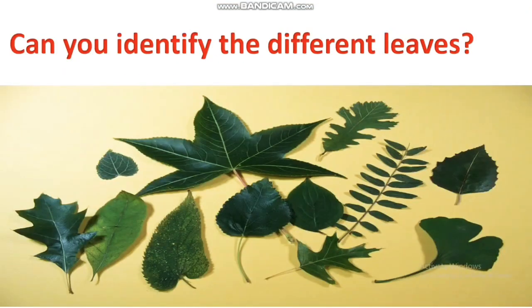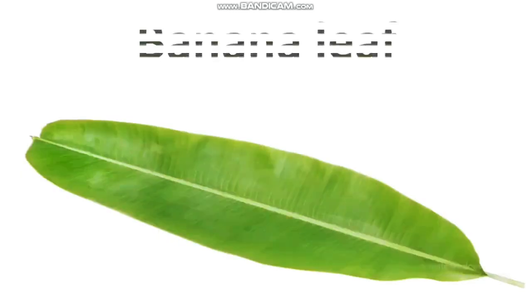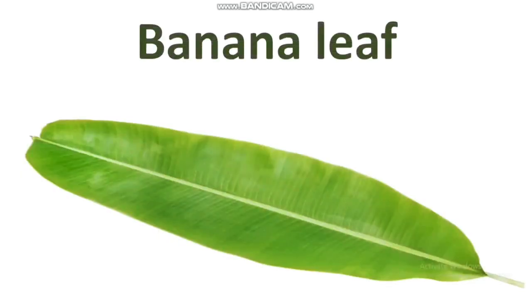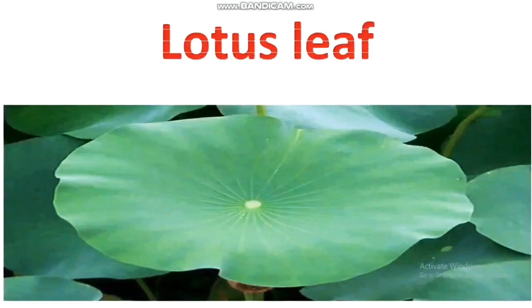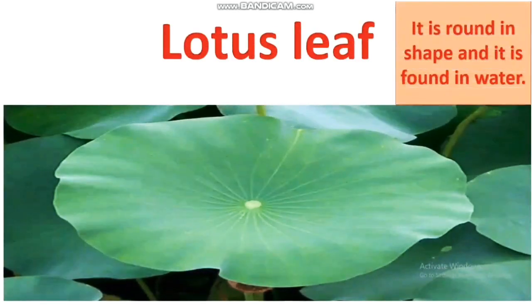Children, can you identify the different leaves? Let's learn how we can identify them. This is the banana leaf — it is large in size. This is lotus leaf — it is round in shape and it is found in water.